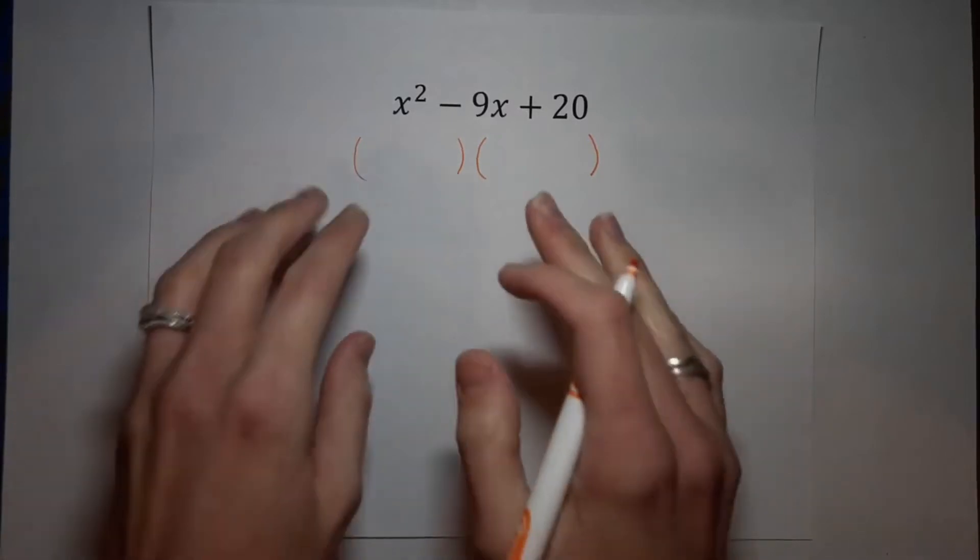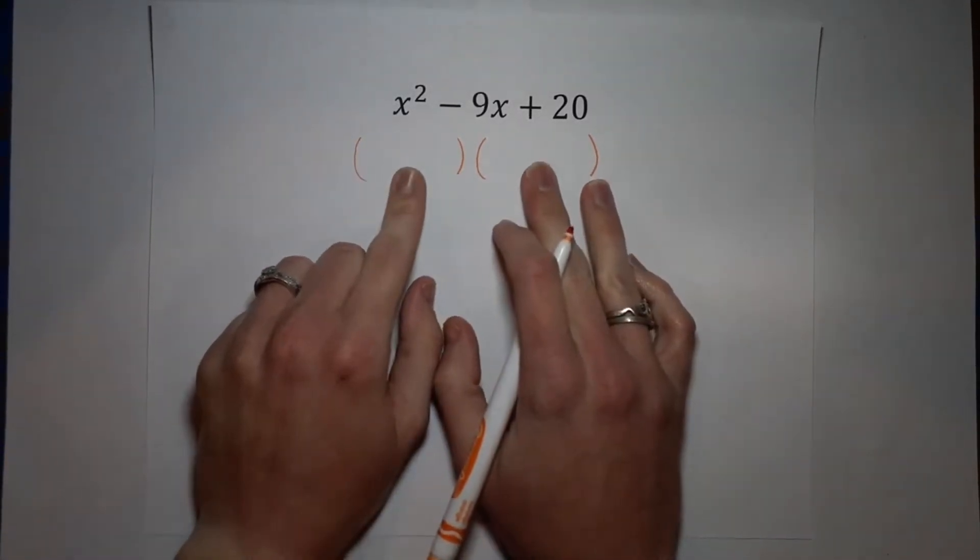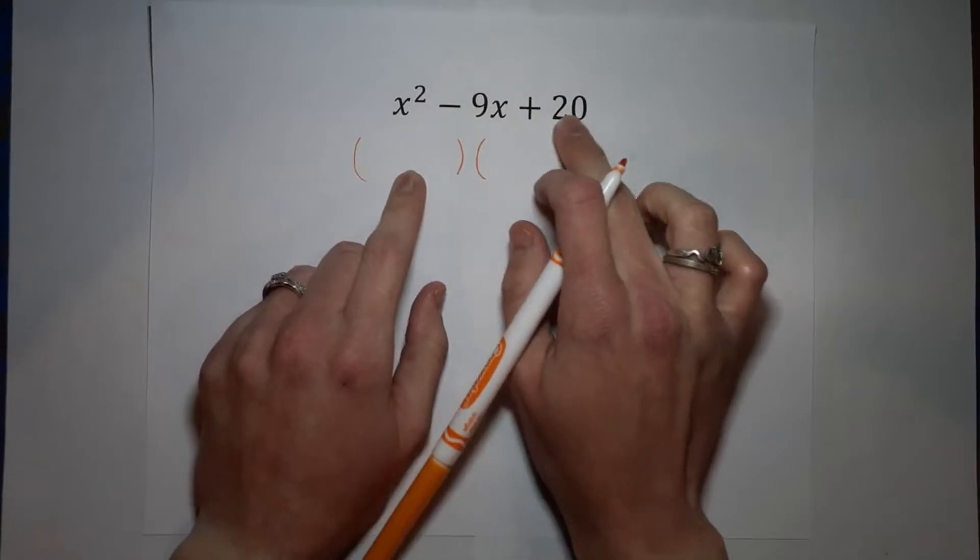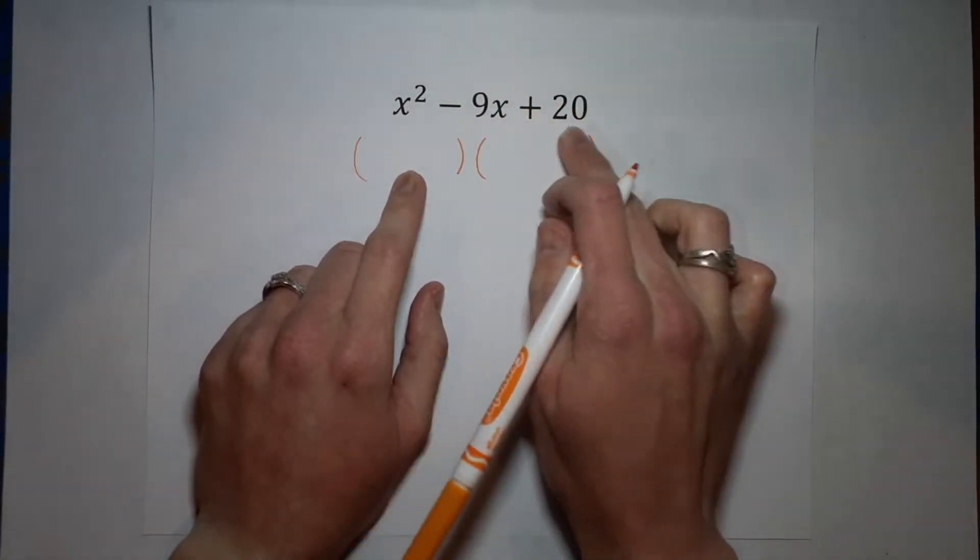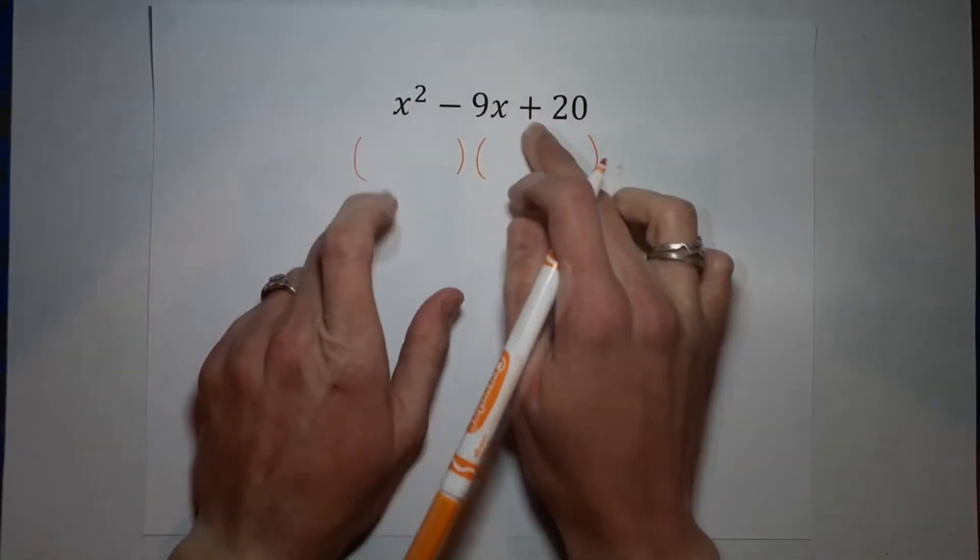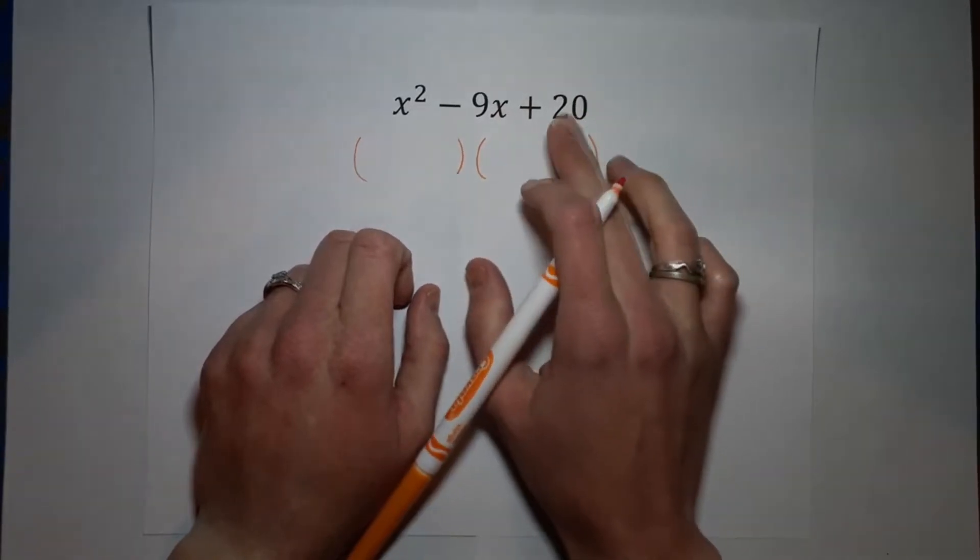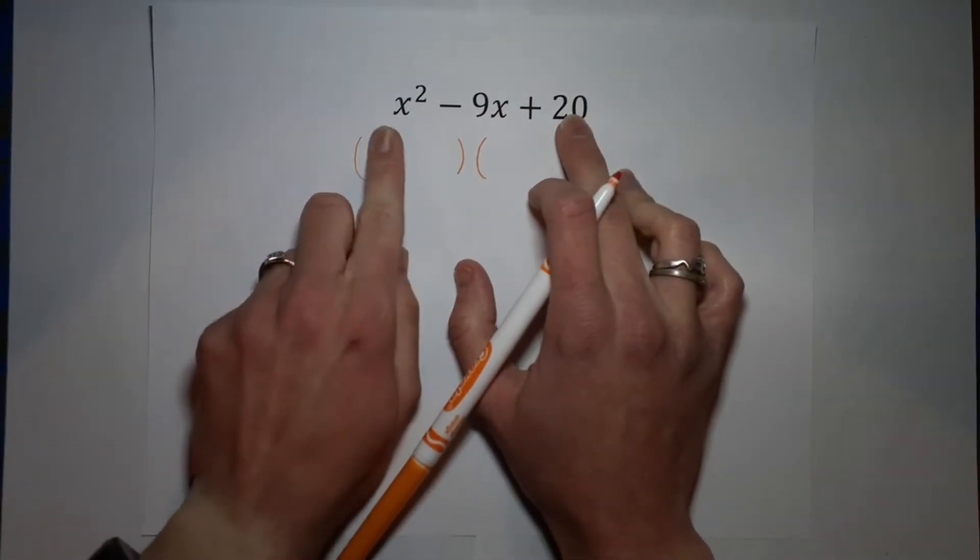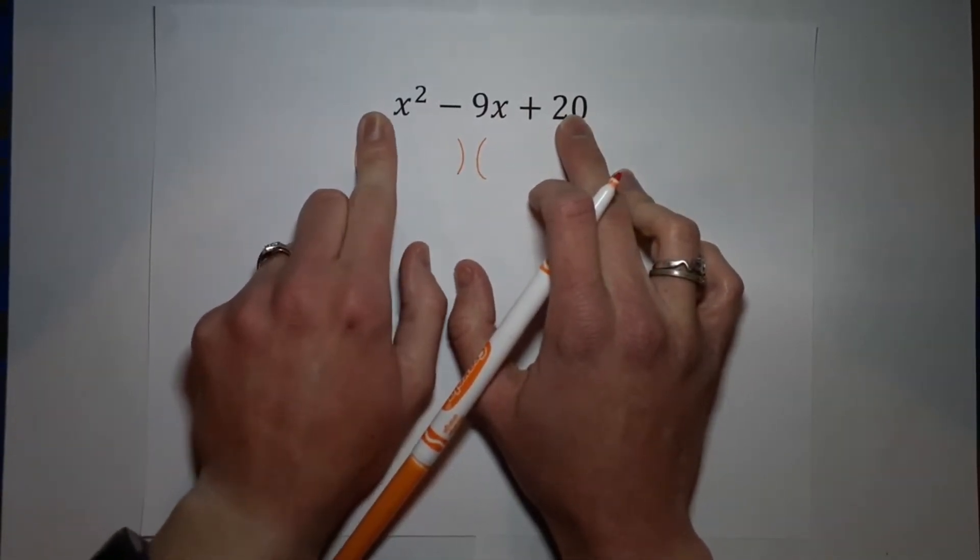So this one, there's no GCF. There's nothing I can pull out. So I just need to figure out what these two parentheses are. How do I do that? Well, you're going to take this number, the number being added on the back, or subtracted, whatever it may be.